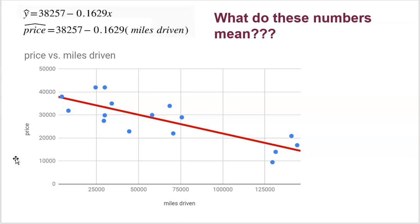We fit a linear model — the best linear model that goes through this data — that produces the sum of the squared residuals to be as small as possible. And that line is: the predicted price y-hat equals 38,257 minus 0.1629 times x, which is the number of miles driven on the truck.